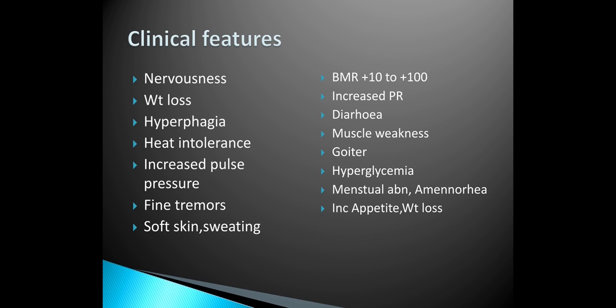Other signs are diarrhea, muscle weakness, goiter, hyperglycemia, and menstrual disturbances. Increased appetite with weight loss. To summarize: exophthalmos (protrusion of eyeball), nervousness and fine tremors, increased cardiac output, increased systolic blood pressure, intolerance to heat and excess sweating, increased BMR, hyperglycemia or decreased cholesterol, weight loss, polyphagia, and diarrhea.